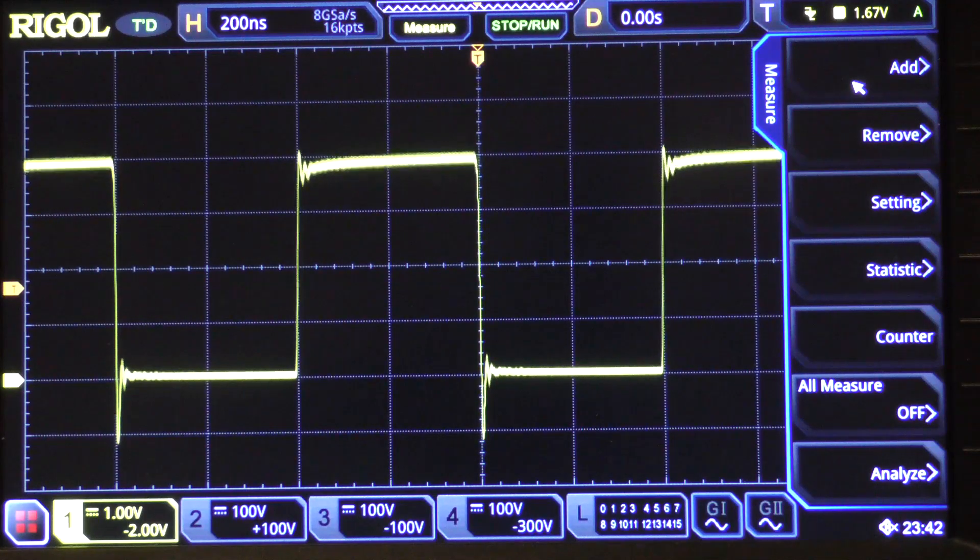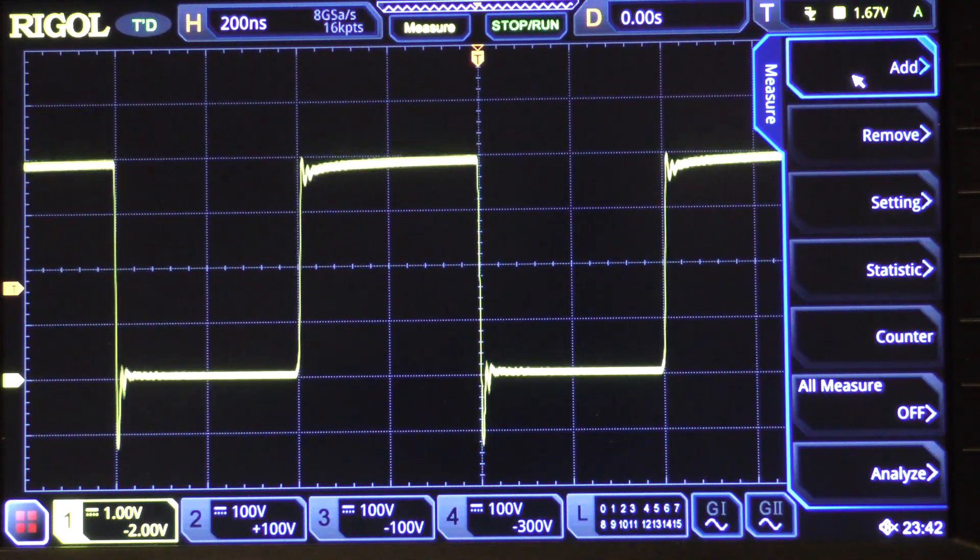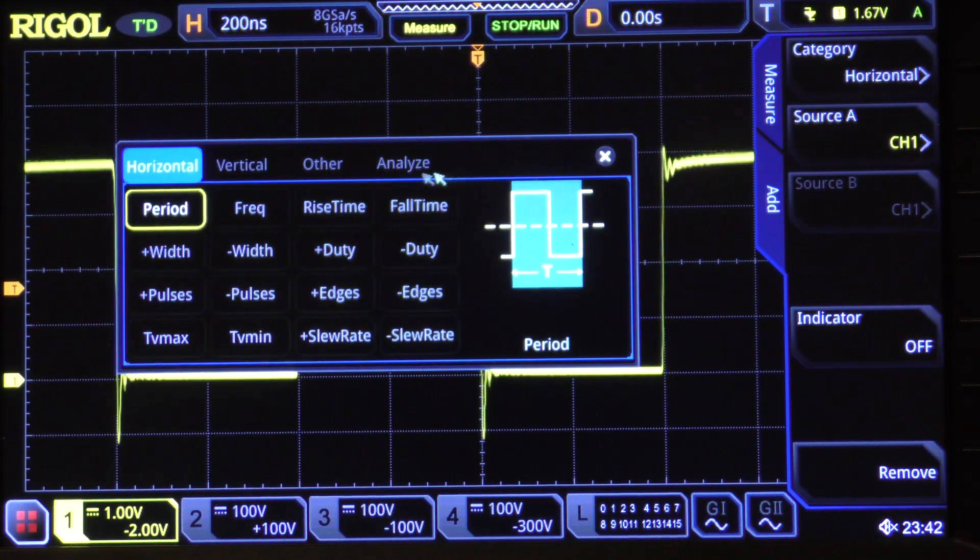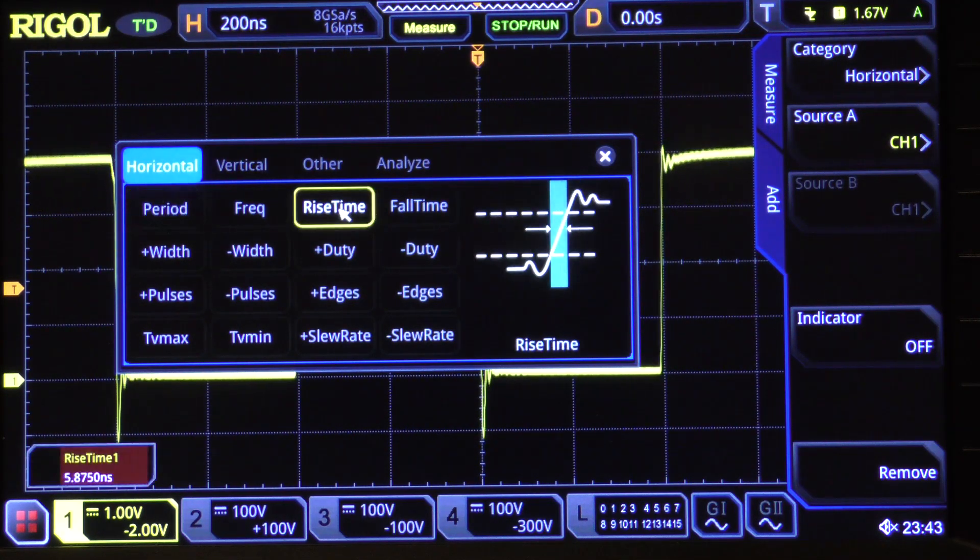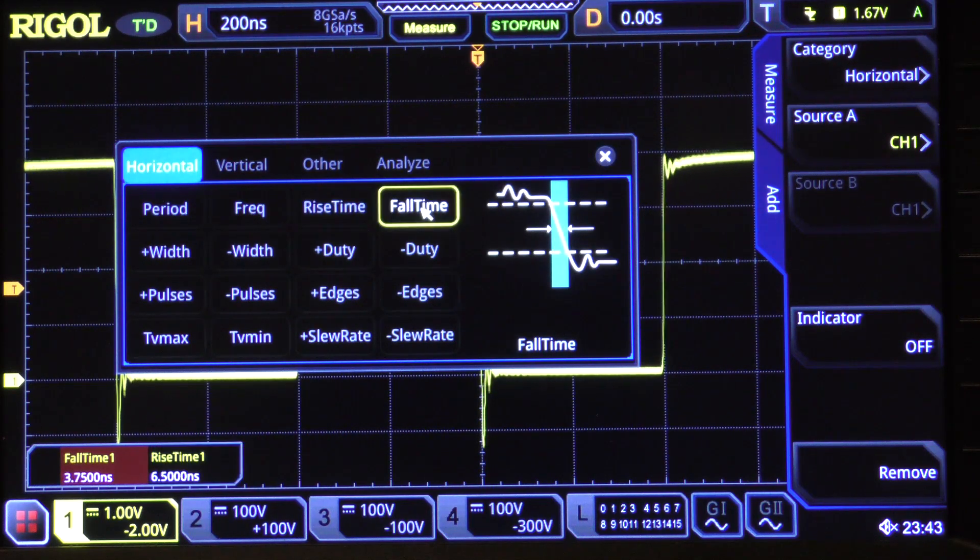If you click on measure either on the touch screen or on the front panel you get a measure menu. To add a rise time or fall time or any of the others, you click on the add button and you get a selection of various things. We could check period or frequency, but since this is a data signal, period and frequency will vary a lot. But one thing that should be relatively constant is rise time and fall time, so we click on those.